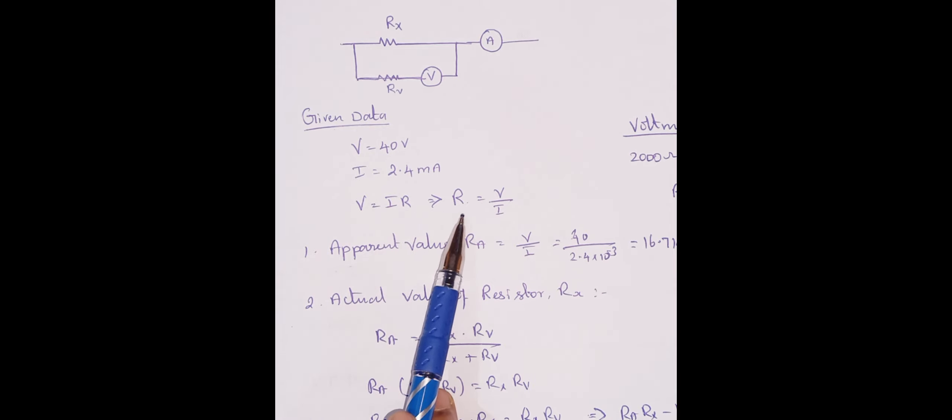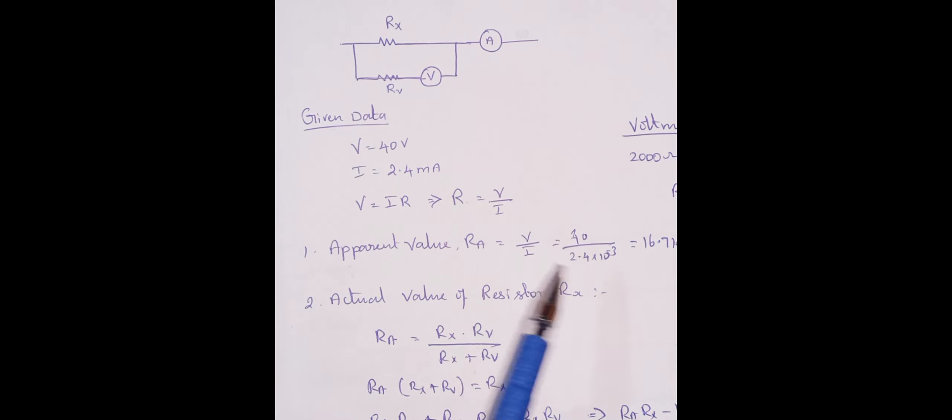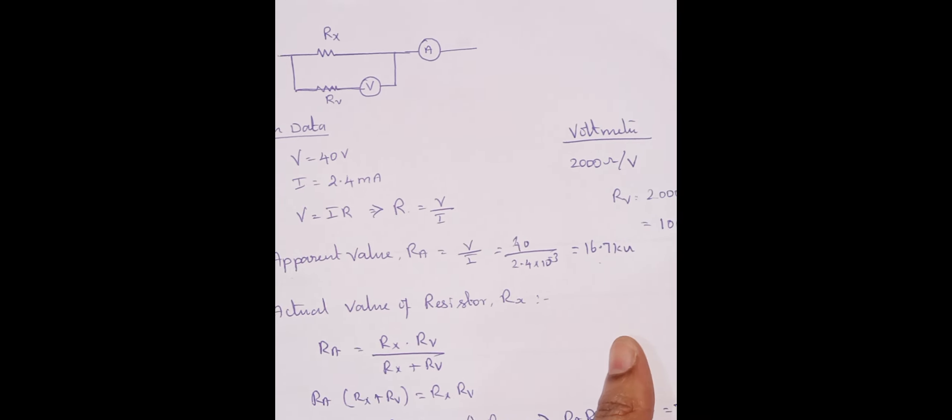Because it is not actually giving the unknown resistance value because this is not considering voltmeter internal resistance. So R is equal to V by I, so V is equal to 40, I value is 2.4 into 10 power minus 3. So we will get 16.7 kilo-ohm.